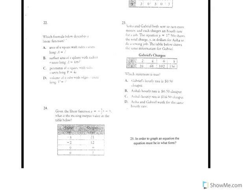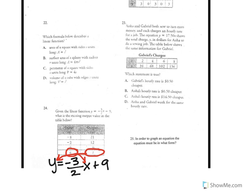Alright, if we're given the equation, y equals negative 3 halves x plus 9. And it says, what is the missing output value in the table below? Missing output value would mean we don't know what the y is when we plug in the input, which would be 6.